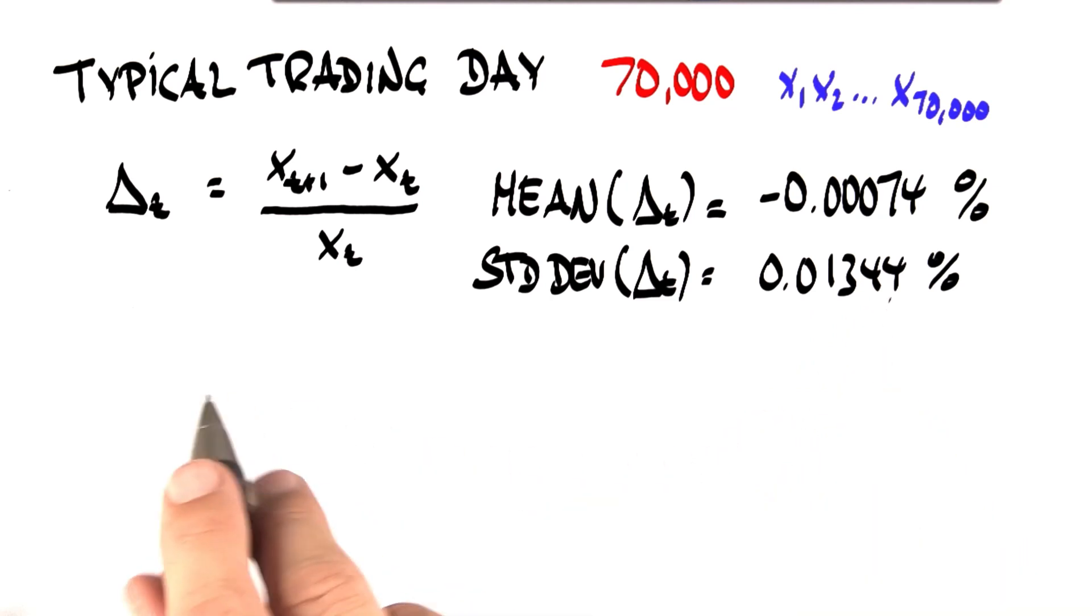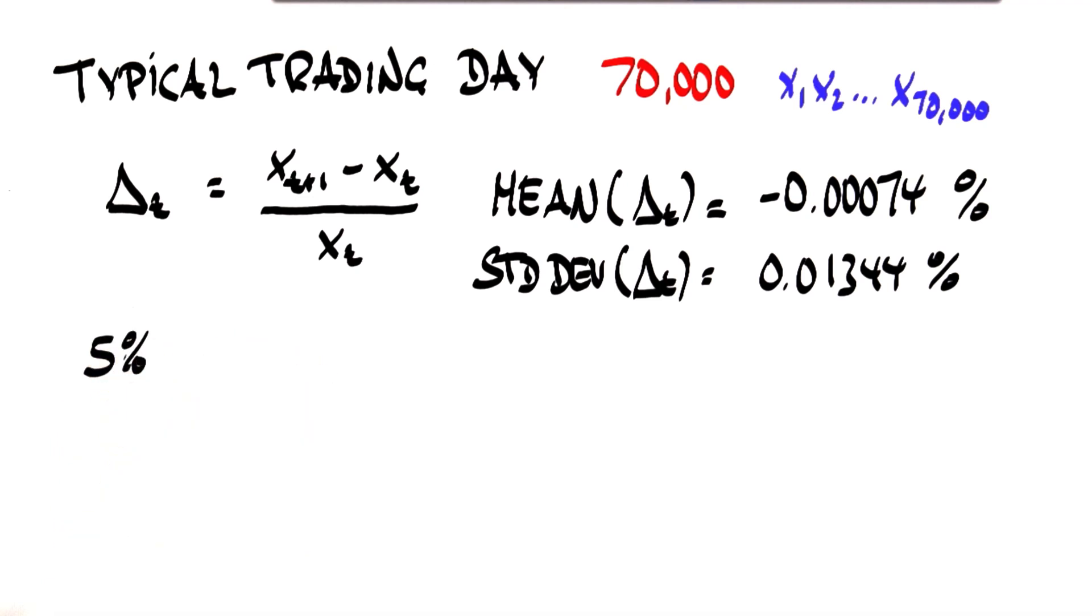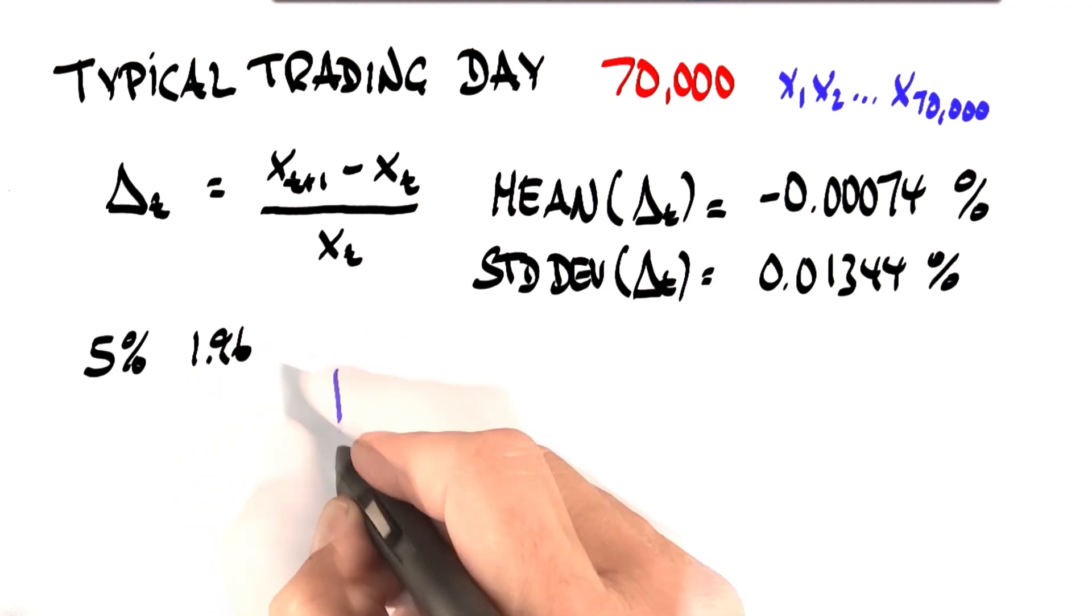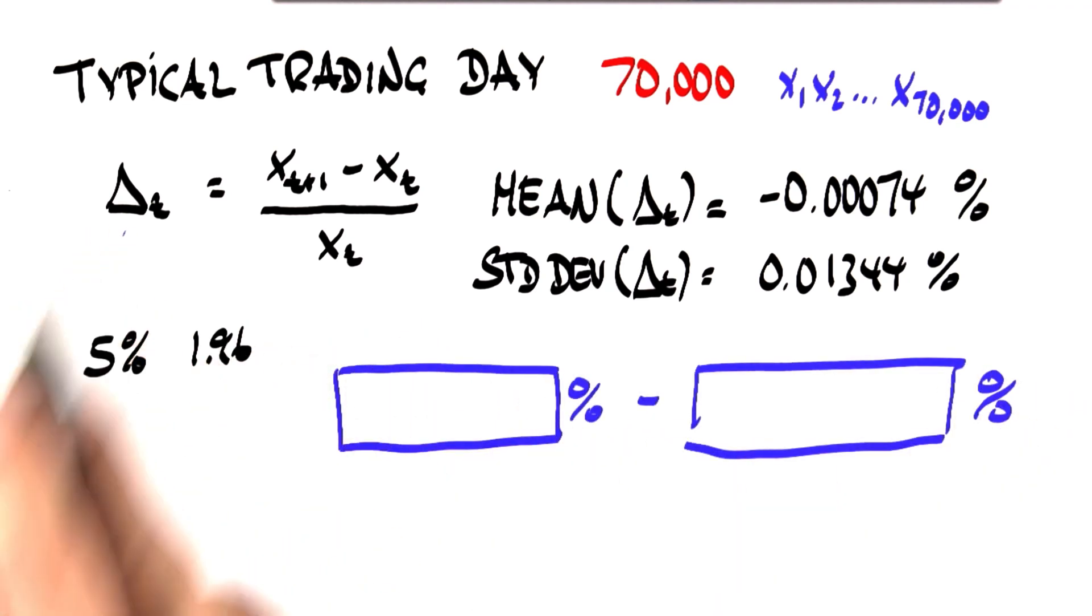My first question for you is to complete the confidence interval, assuming that we can use a confidence interval to detect outliers in the data. If you assume a symmetrical confidence interval with 5% confidence, and our magic factor the percentile is 1.96, compute for me in percent the confidence interval for the variable delta t.